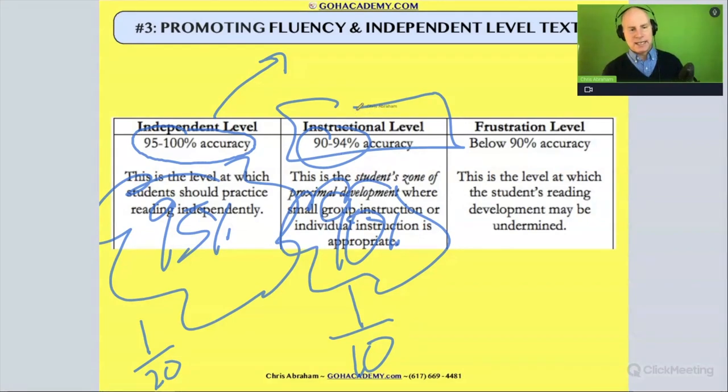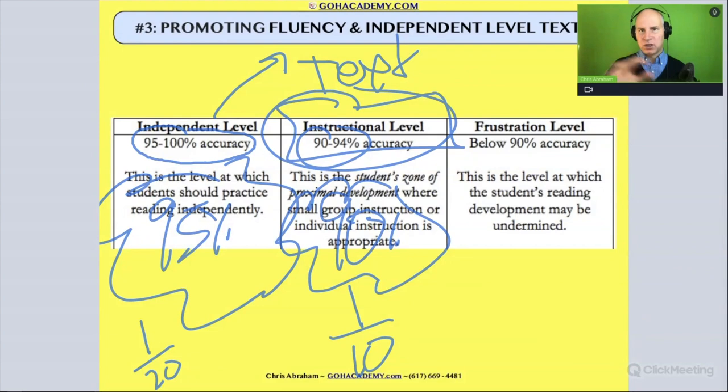This is that level with that type of text that you would do with that group of students in that particular group. In the instructional level, it means that the teacher is going to be able to do some scaffolding to help support those one out of every 10 words the students are missing. So it's a good instructional level book, a small reading group book level.